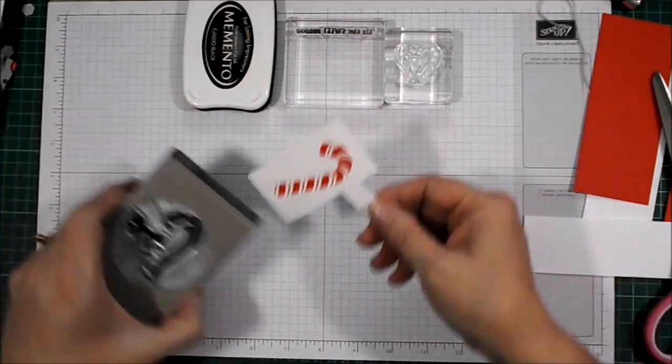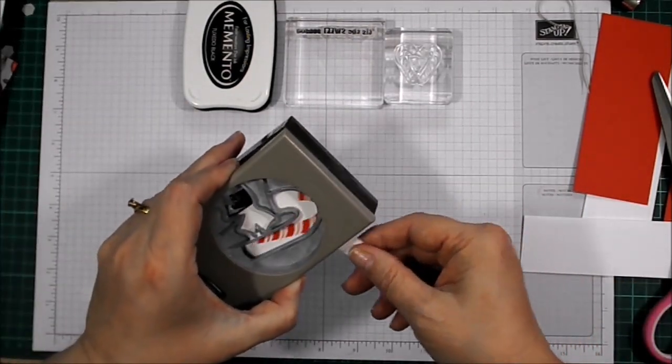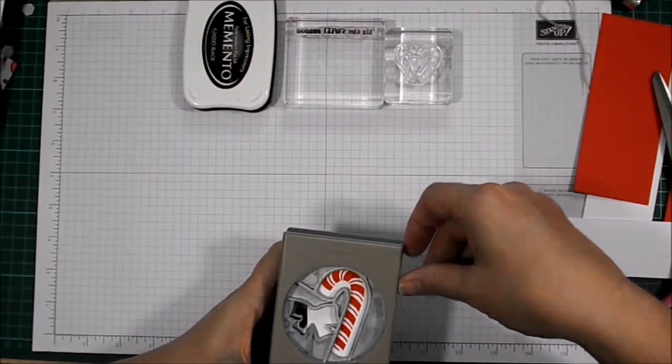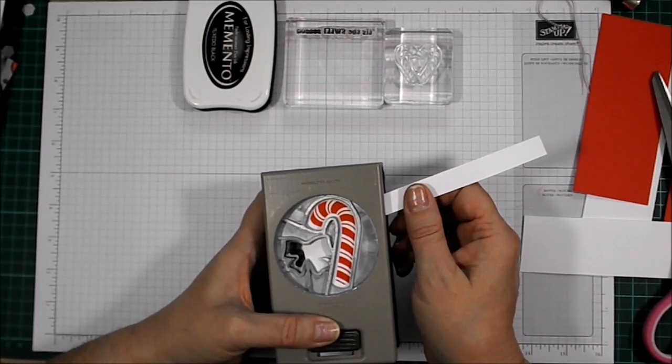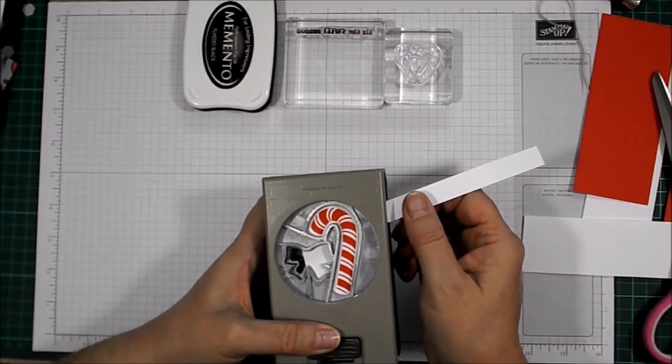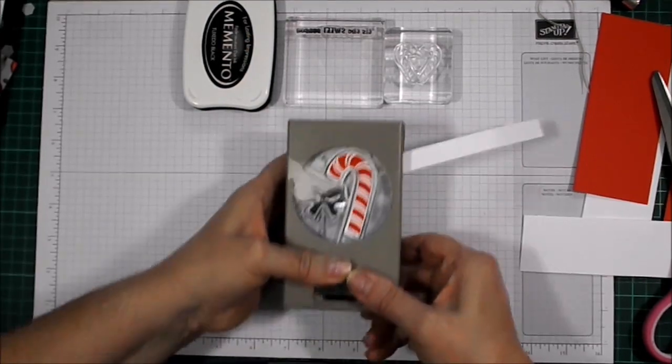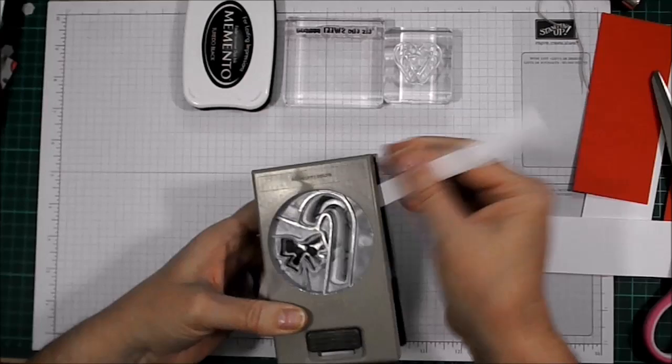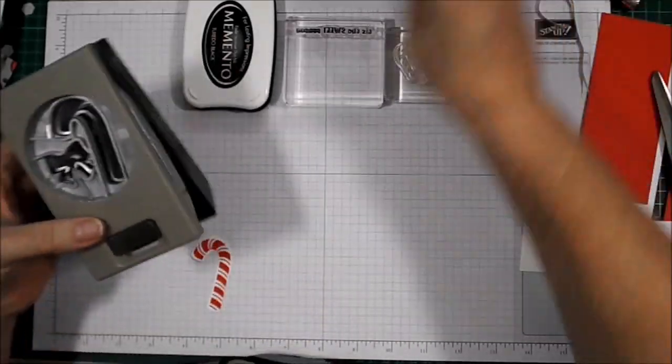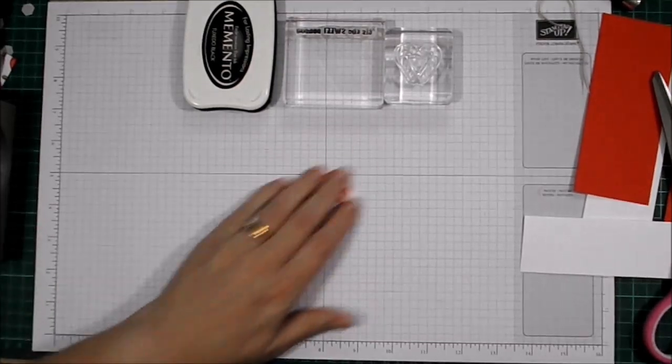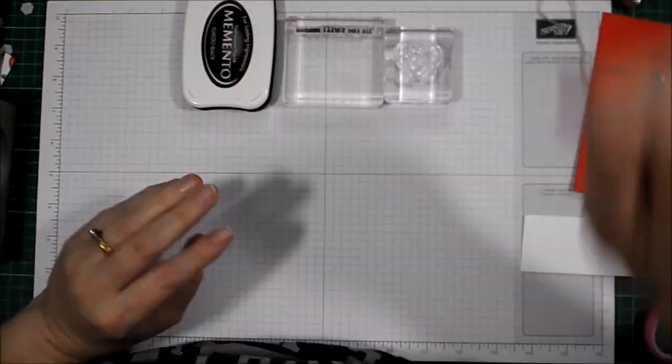There we go, and that should go in fine now. Yeah, I can manage to wiggle it. That was a bit tough going through because of the extra cardstock there, but there we go. We've got a candy cane all punched out.